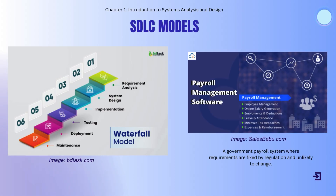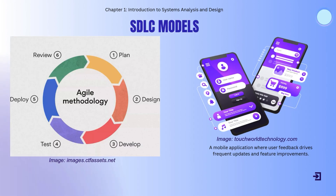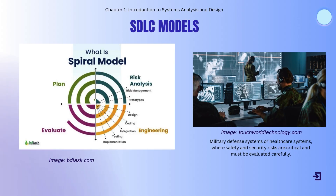There are different models of the SDLC. The Waterfall model is linear and sequential, best for projects with fixed requirements — for example, a government payroll system where requirements are fixed by regulation and unlikely to change. The Agile model is iterative and collaborative, delivering working software in short spans of time — for example, a mobile application where user feedback drives frequent updates. The Spiral model combines iteration with risk analysis, making it suitable for large and high-risk projects, such as military defense or healthcare systems where safety and security risks must be evaluated carefully. Each model has advantages and is chosen based on project needs.